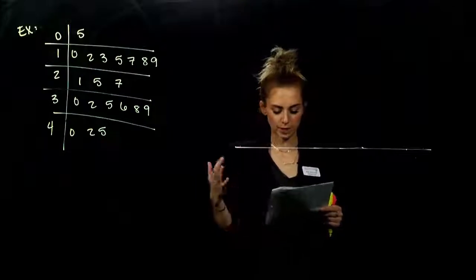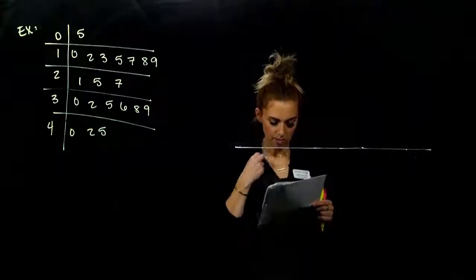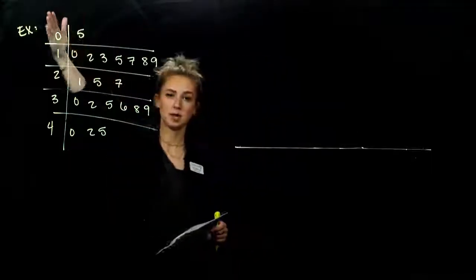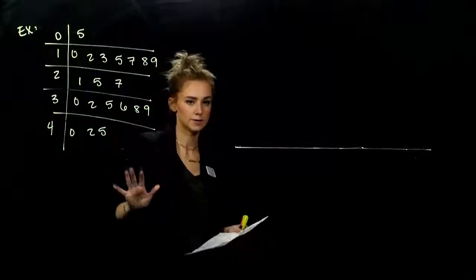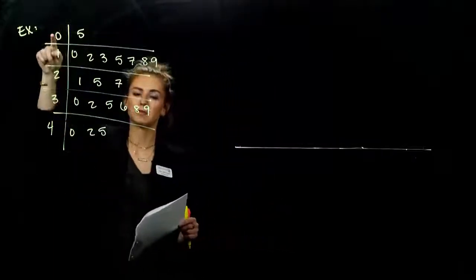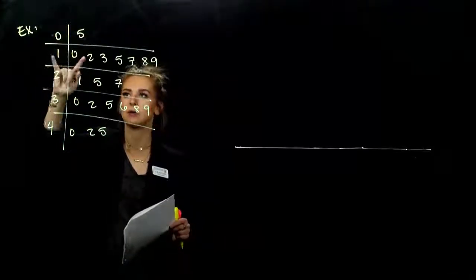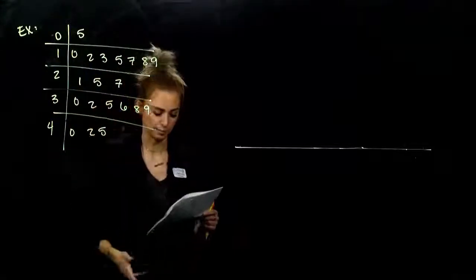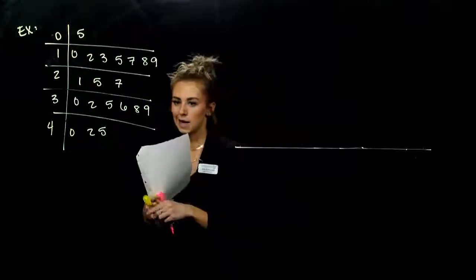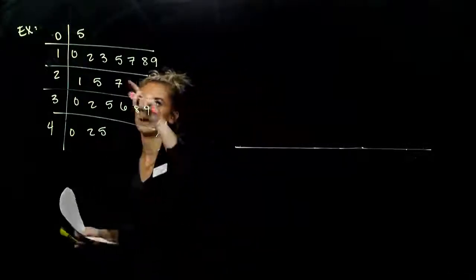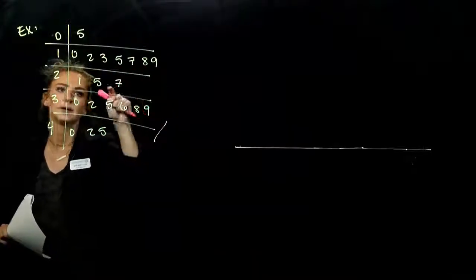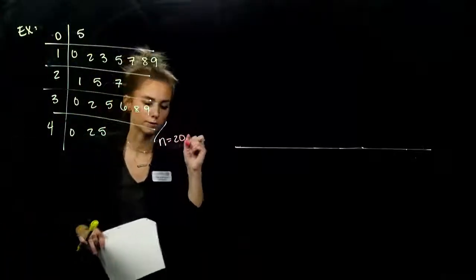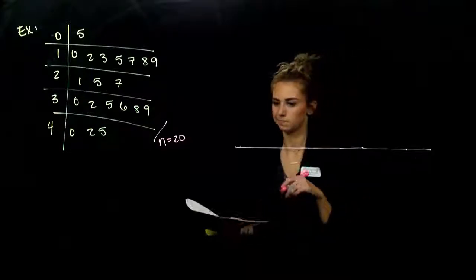Our last example: construct a box plot for the number of hours watching TV in a week, given in a stem-and-leaf plot where the stem is the first digit and the leaves are the second. Reading the values: 5, 10, 12, 13, 15, 17, 18, 19, 21, 25, 27, and so on. In total, counting them up, we have 20 data items. So we need to start dividing up all of this data.